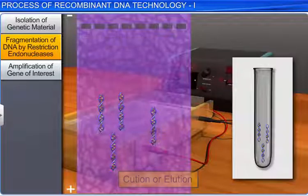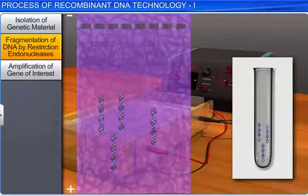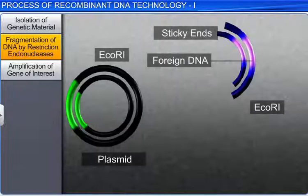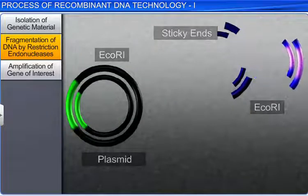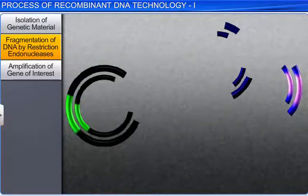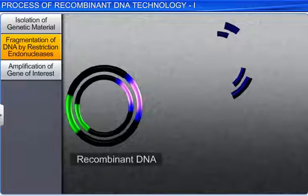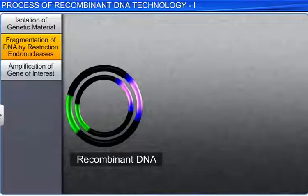Stained agarose gel with DNA fragments can be seen under a UV light chamber. Later, the cut-out piece of the source DNA, or the foreign DNA fragment, and the cut plasmid DNA are joined with the help of the enzyme DNA ligase.